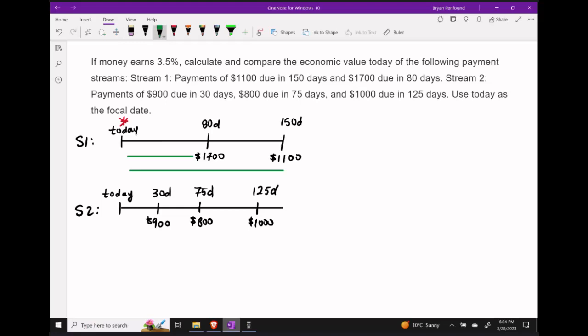Let's consider stream one first. We have two payments: $1,700 and $1,100, both of which we need to move to today's focal date. Let's turn this into a three-step process.